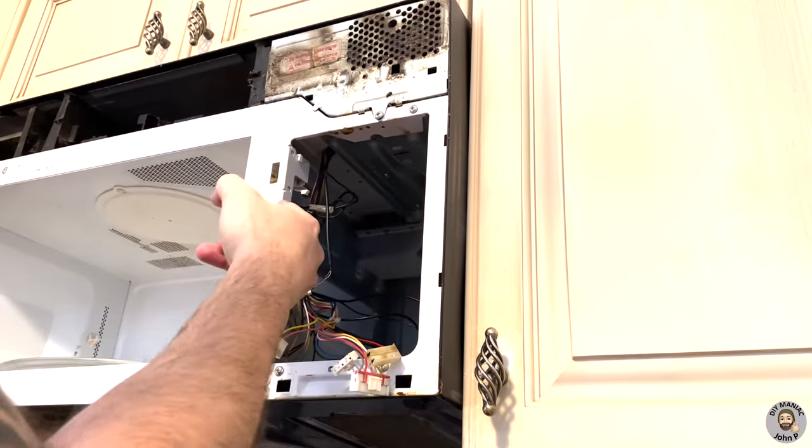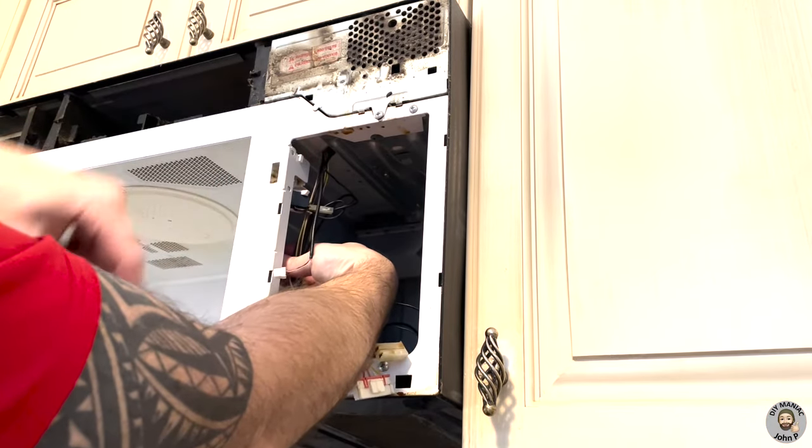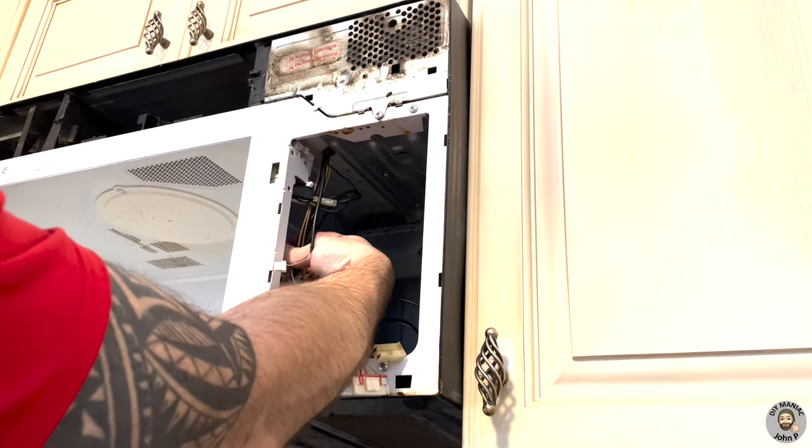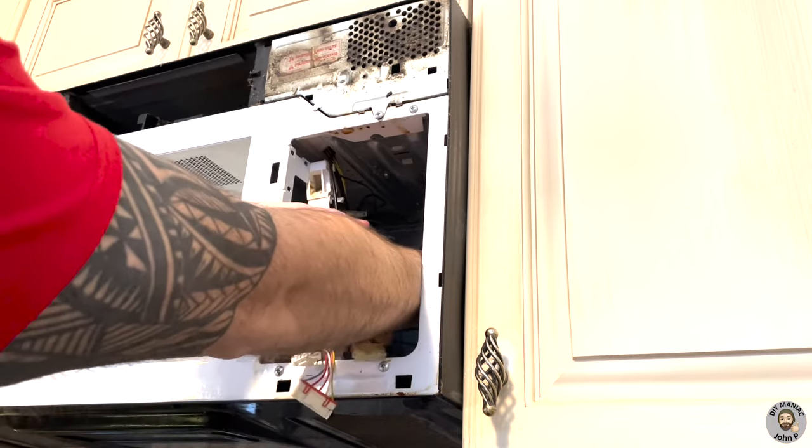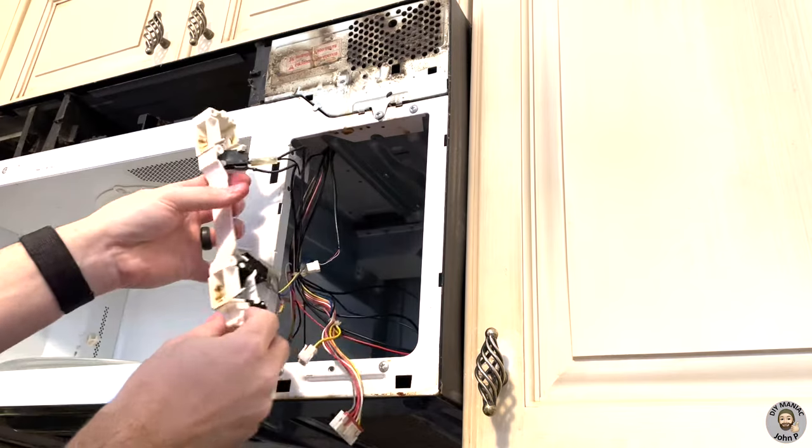The two screws are removed. To remove the assembly, it's hanging on a little plastic hook. We lift the assembly up, slide it backwards, and that allows us to remove it from the body of the microwave.